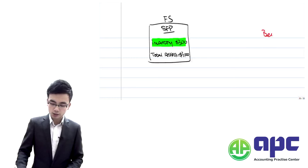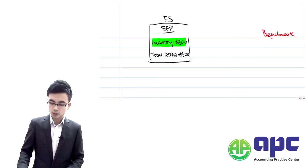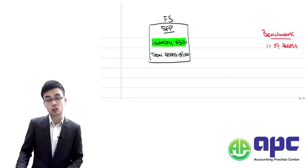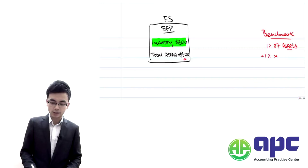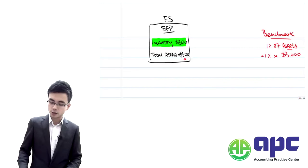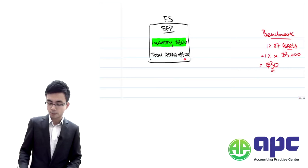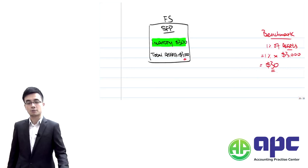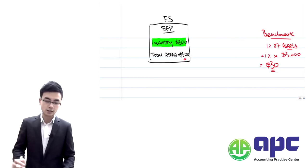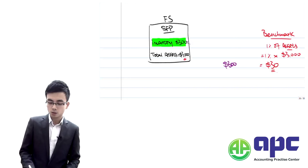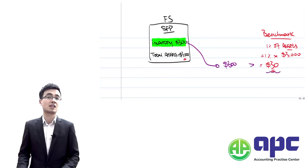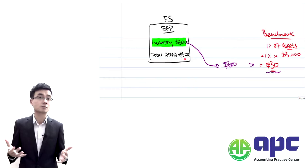So 1% times total assets of $3,000 gives us $30 — anything above $30 would be material. In this case, inventory is $300, which is much greater than the preliminary materiality level, so the inventory is material. Alternatively, using a relative measure: inventory of $300 divided by total assets of $3,000 equals 10%, which is much greater than 1%, confirming that inventory is material.